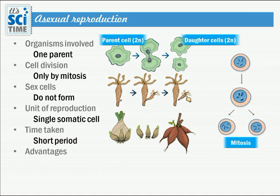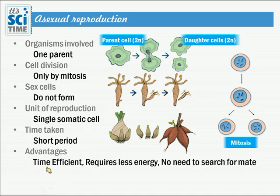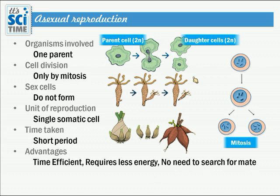Advantages of asexual reproduction: first, it is time-efficient, as offspring are produced within a short period. Second, it requires less energy because only mitosis takes place and sex cells are not produced, so no energy is spent finding a mate. Third, there is no need to search for a mate — only one parent is needed to produce young ones.